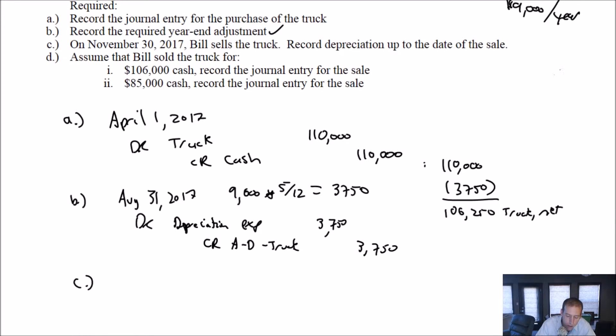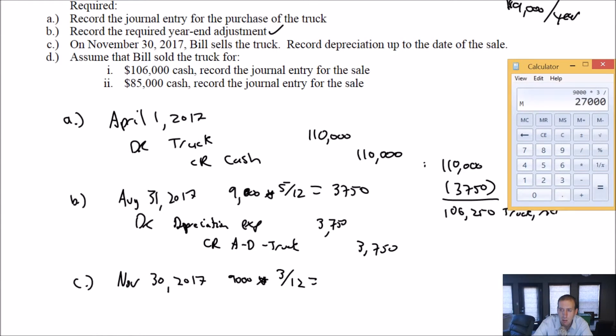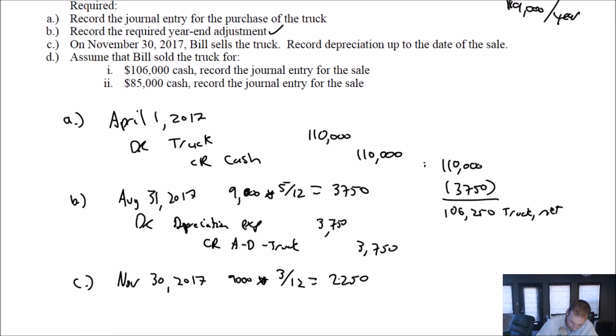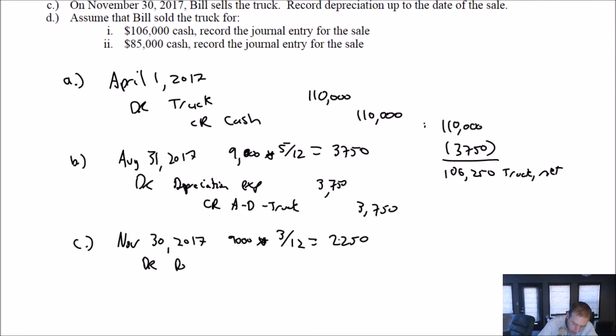Part C, on November 30th, Bill sells the truck. Record depreciation up to the date. So let's see, it's August now. So August, September, October, November. It's three months after that. So November 30th, 2017, we have an additional three months of amortization. It was $9,000 for a year. We're doing three twelfths of a year. $2,250 in depreciation. So I debit depreciation expense. We always have to depreciate an asset up to the date of the sale. And so that's what we're doing here. $2,250. We credit accumulated depreciation on our truck for $2,250. We're just depreciating this up to the date of the sale.